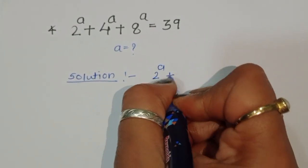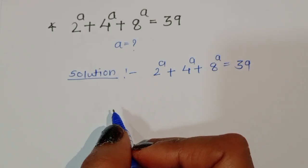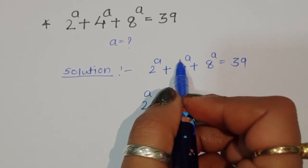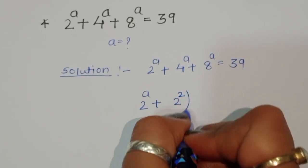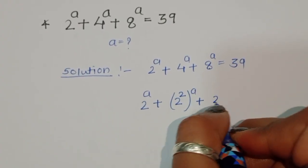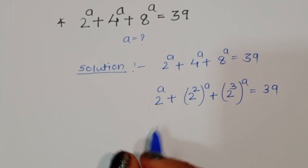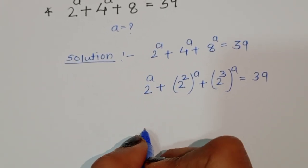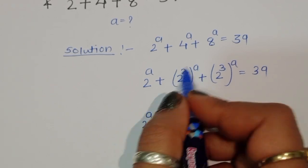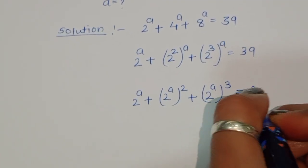2 power a plus 4 power a plus 8 power a is equal to 39. Now, 2 power a we can write as it is, 4 power a — we can write 4 in square form as 2 power 2, so it becomes (2 power 2) power a. And 8 we can write as 2 power 3, so it becomes (2 power 3) power a. This gives us 2 power a plus 2 power 2a plus 2 power 3a is equal to 39.